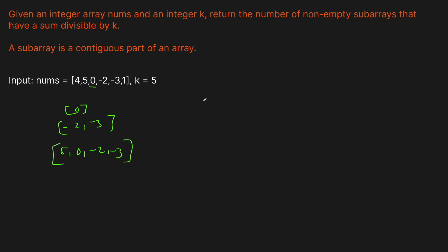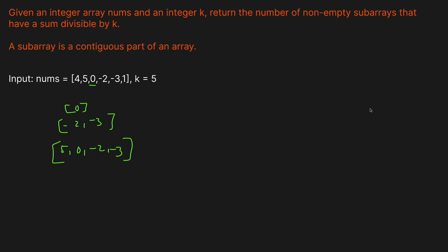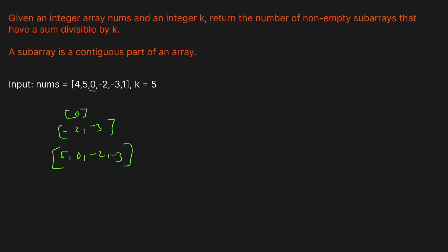Now the trick is how do we do this efficiently? We could generate every possible subarray, take its sum, and check if it's a multiple of five — but that's horrendously inefficient. We want something better. Is it possible to do this in one pass? The answer is yes.